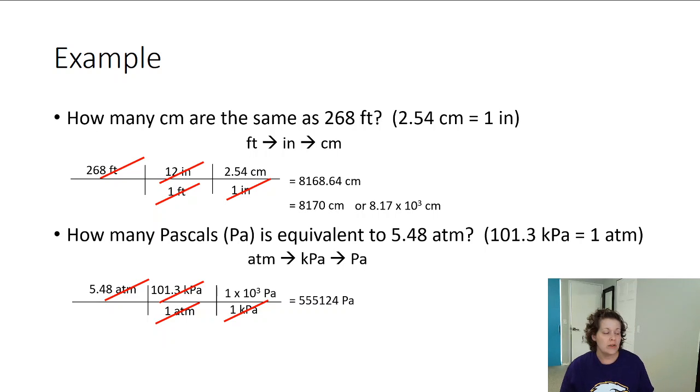Round into the appropriate sig figs. I ignore my conversion factors because those are known quantities. I look at my 5.48. That has 3 sig figs. So my 3rd sig fig, it's going to be the 555. That's my 3rd sig fig. 1 is not going to round up. So my answer is going to be 555,000 or 5.55 times 10 to the 5 pascals.